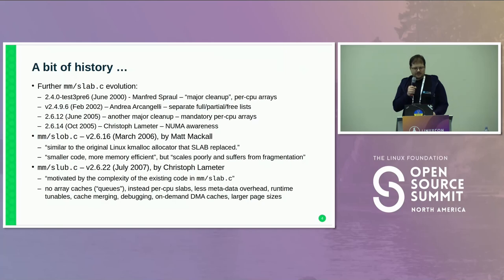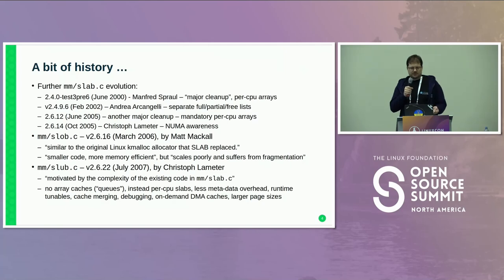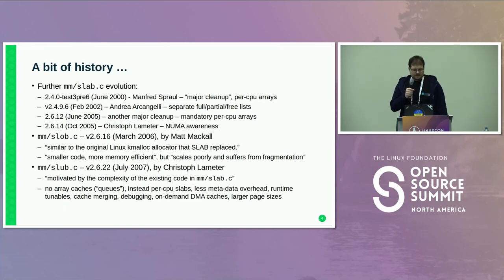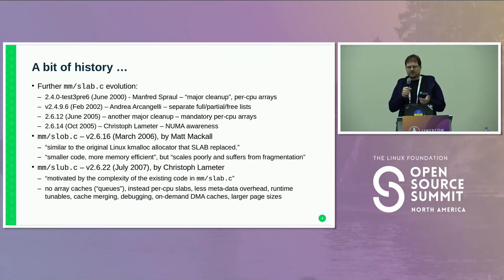NUMA awareness was added at some point and has been there since. In 2006, another allocator was added — slob — which was again more similar to the original one, supporting just kmalloc and kfree and prepending the size to each object. The use case was that some systems are too tiny to handle the overhead of the better allocator, so slob does the simple thing that groups everything together. You pay worse scalability, but it probably doesn't matter on a small device with just one CPU.